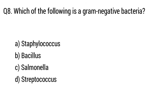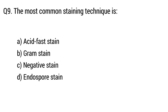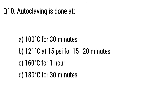Question 7: Which microorganism causes tuberculosis? The right answer is option B, Mycobacterium tuberculosis. Question 8: Which of the following is a gram-negative bacteria? The right answer is option C, Salmonella. Question 9: The most common staining technique is? The right answer is option B, Gram stain.